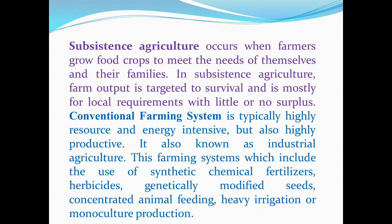First, subsistence farming systems. Subsistence agriculture occurs when farmers grow food crops to meet the needs of themselves and their families. In subsistence agriculture, farm output is targeted to survival and is mostly for local requirements with little or no surplus.